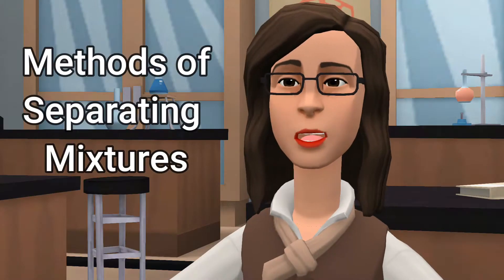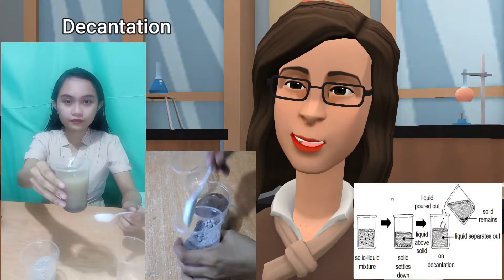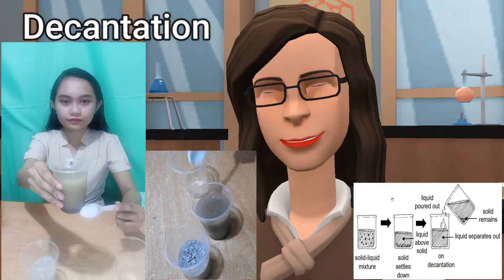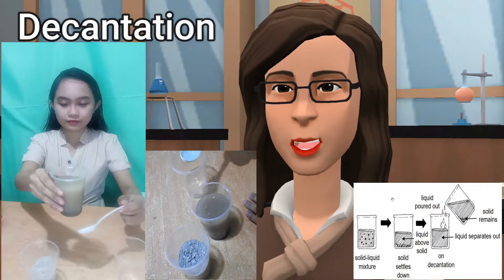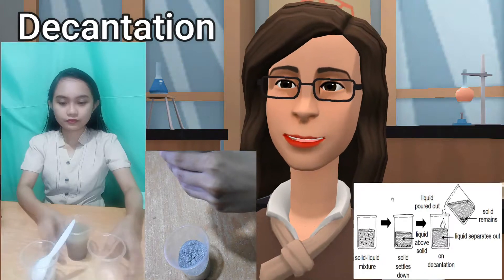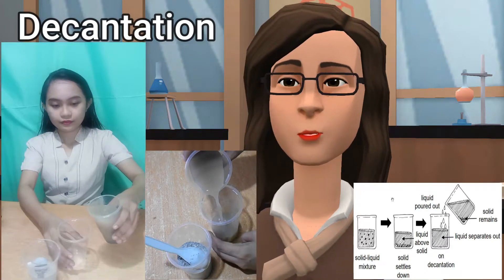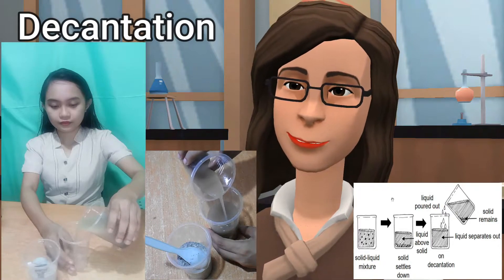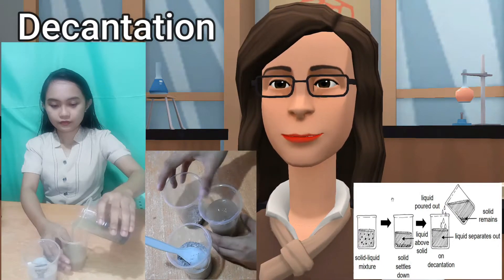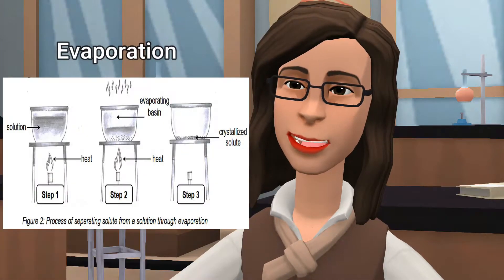Methods of Separating Mixtures. Decantation: This method of separating the components of a suspension allows the heavy particles in a mixture to settle at the bottom of the container. This makes it possible for the clear liquid to be poured into a separate container.